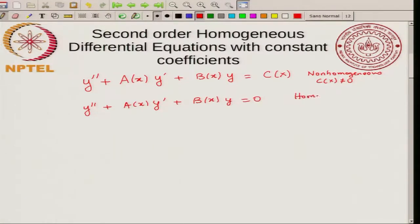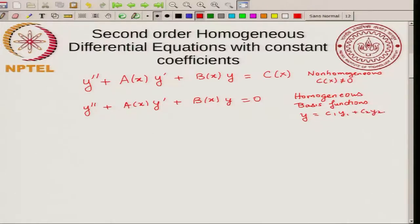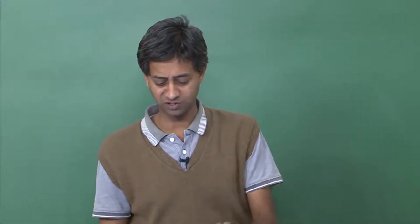This is homogeneous. For homogeneous equations you have basis functions, so you can write your general solution as a linear combination of basis functions: C1 y1 plus C2 y2, where y1 and y2 are solutions of the differential equation. This is a nice feature of homogeneous equations which is not there for non-homogeneous equations — you cannot write this for non-homogeneous equations.